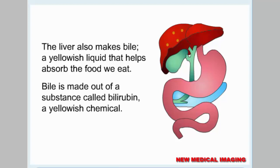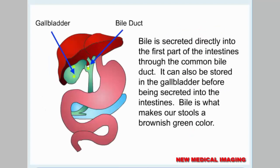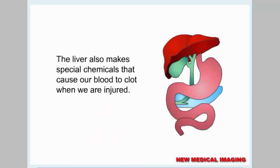Bile is made out of a substance called bilirubin, a yellowish chemical. Bile is secreted directly into the first part of the intestines through the common bile duct. It can also be stored in the gallbladder before being secreted into the intestines. Bile is what makes our stools a brownish-green color. The liver also makes special chemicals that cause our blood to clot when we are injured.